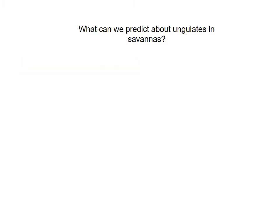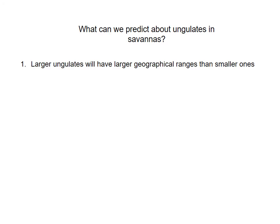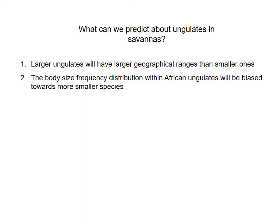Given this information, what can we predict about ungulates in savannah habitats? First, larger ungulates will tend to have generally larger home ranges than smaller ungulates. Second, the body size frequency distribution within African ungulates will be biased towards the smaller species. Why? Because we don't have very large areas where we can have lots of very large animals — it comes down to how much food and habitat is available. There is much greater diversity in terms of smaller habitats, so we would expect a bias towards more smaller species than larger species.